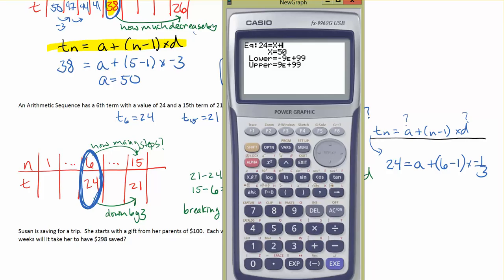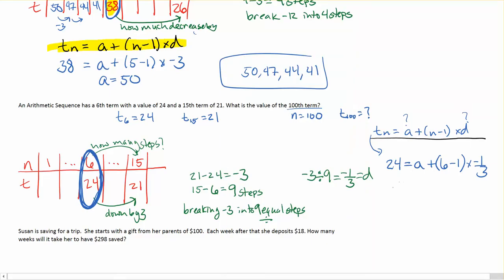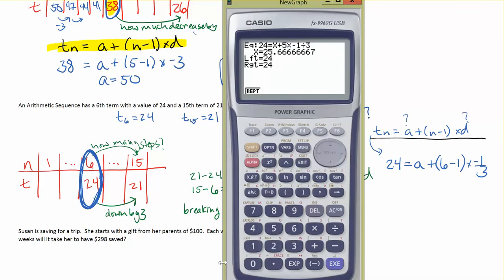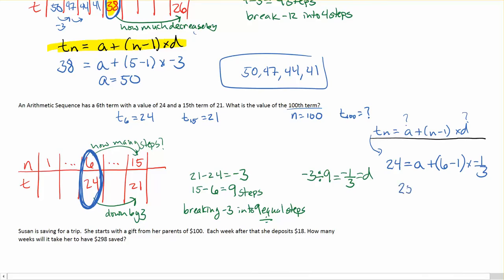If I put this in a solver, let's see what I get. So, type in what I see. 24 is equal to something I don't know. Plus, I'm just going to do the subtraction in my head. 6 minus 1 is 5, so 5 times negative 1 third. So, negative 1 divided by 3. Don't forget to hit solve.